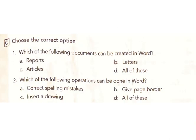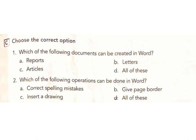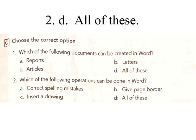C: Choose the correct option. One: which of the following documents can be created in Word? A) reports, B) letters, C) articles, D) all of these. Answer: D, all of these. Two: which of the following operations can be done in Word? A) correct spelling mistakes, B) give page border, C) insert a drawing, D) all of these. Answer: D, all of these.